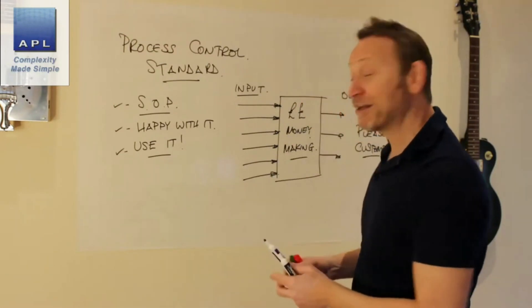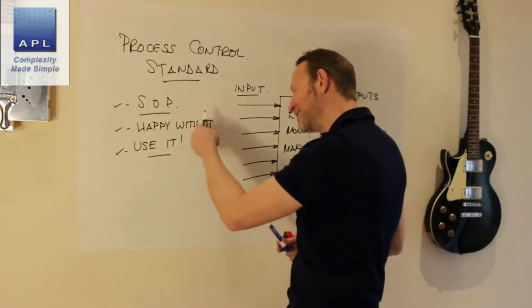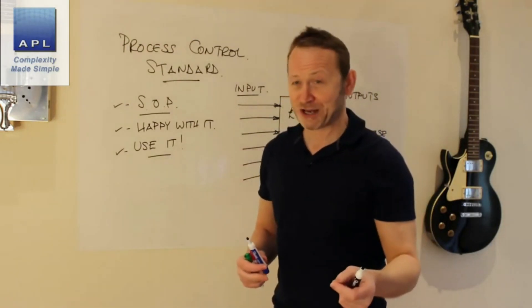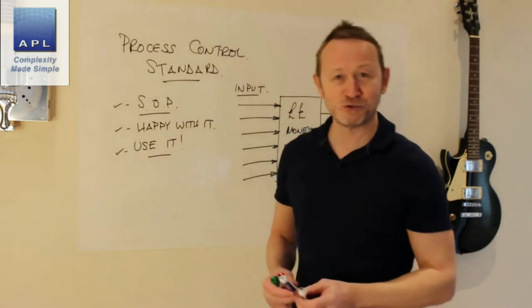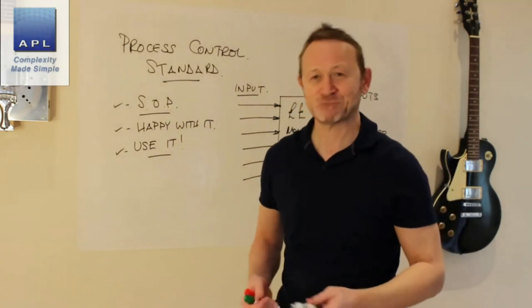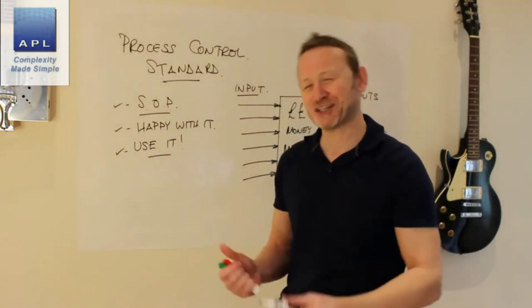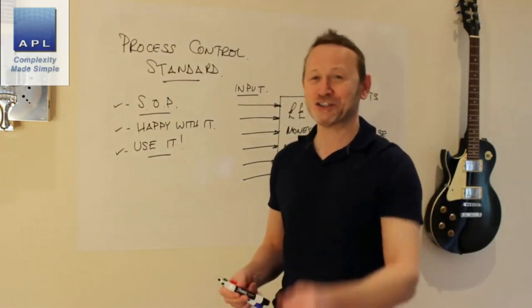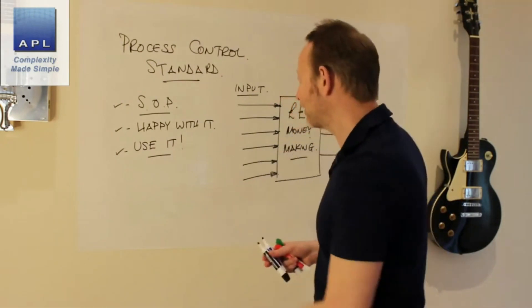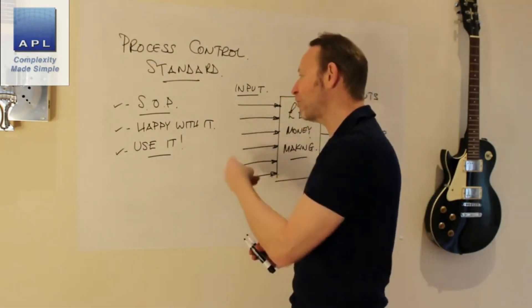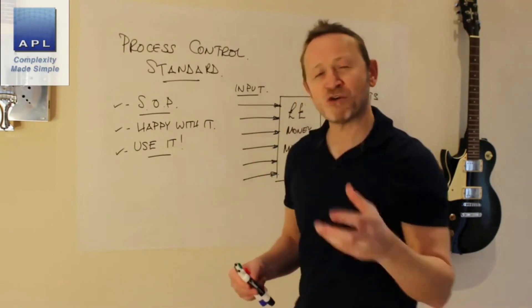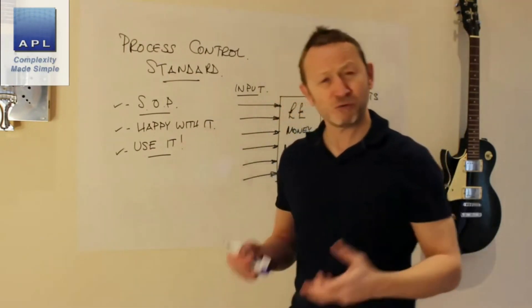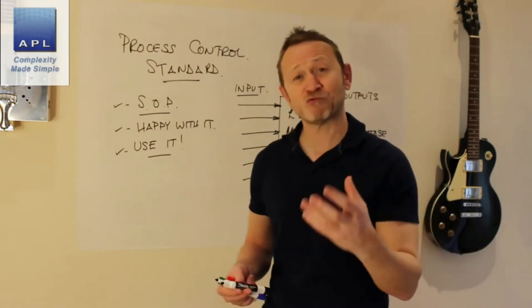Where it typically goes wrong is these two here. People either write half-arsed standards or they don't use them. They like to write concessions and just say it'll be okay, or we'll let the operator just find his own way. But here's where control typically goes wrong: we don't write good enough standards or we don't use them. What I want to talk about today is how to write a great standard.